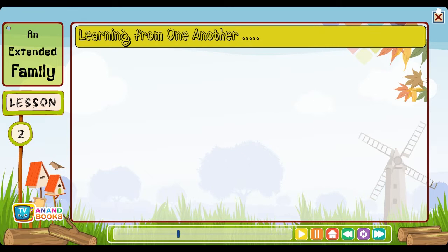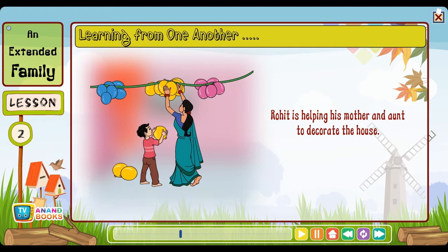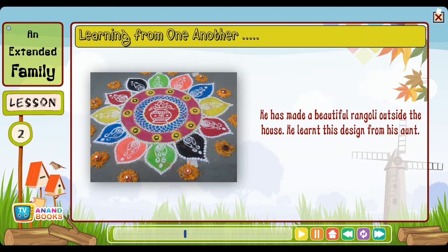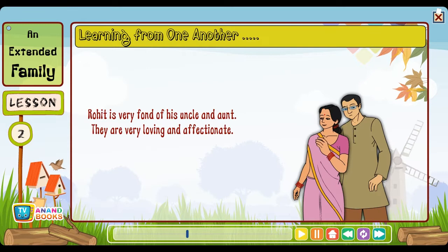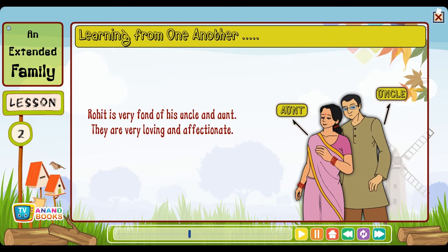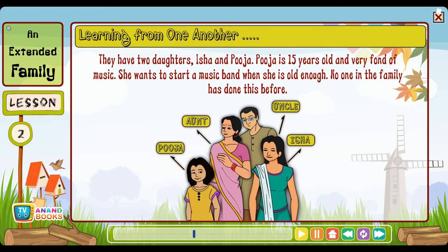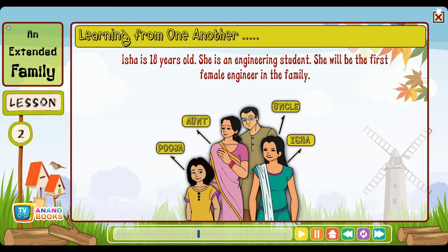There is a lot of excitement and happiness in the family — everyone is happy to meet one another and they have a lot to share and talk about. Rohit is helping his mother and aunt to decorate the house. His mother has taught him about family traditions and good habits. He has made a beautiful rangoli outside the house, having learned the design from his aunt. Rohit is very fond of his uncle and aunt's two daughters: Isha, who is 18 years old and an engineering student — she will be the first female engineer in the family — and Pooja, who is 15 and very fond of music.